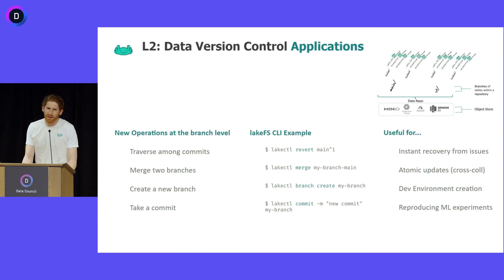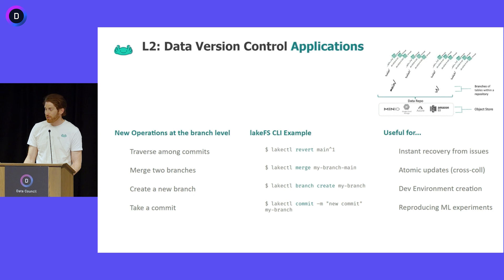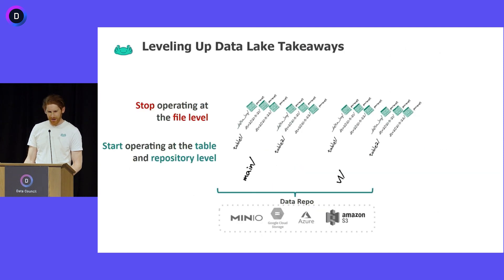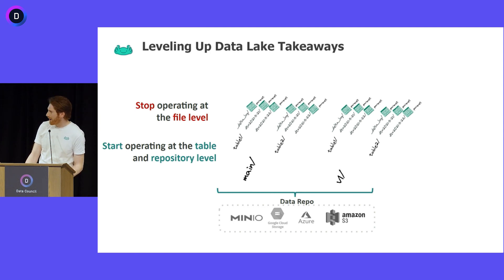Finally, this is a common machine learning use case: you want to run an experiment and have it be reproducible so someone a month later can run the same experiment and confirm the results. But it's not easy to reproduce the exact state the data was in at that time. If you take a commit, you will have a generated commit ID you can reference to pull in the state of those tables at that time. So those are the main ways to level up your data lake — if you're operating at the file level, consider operating at the table and repository level instead.